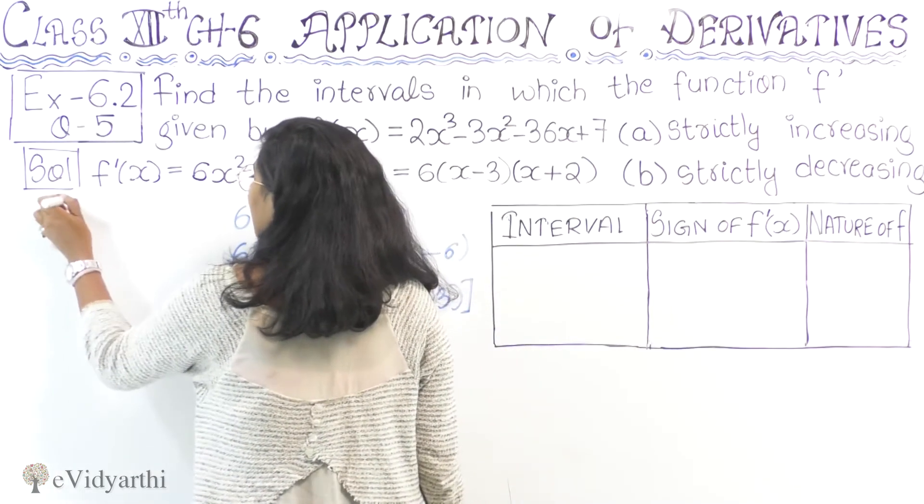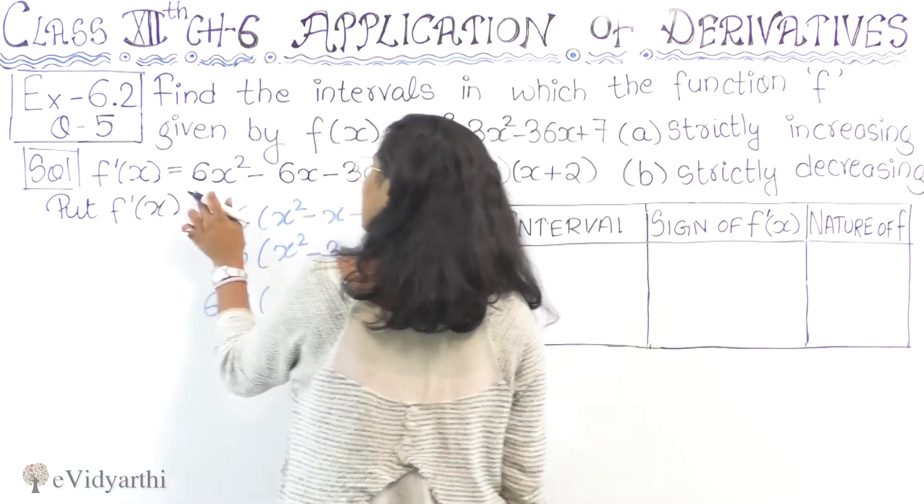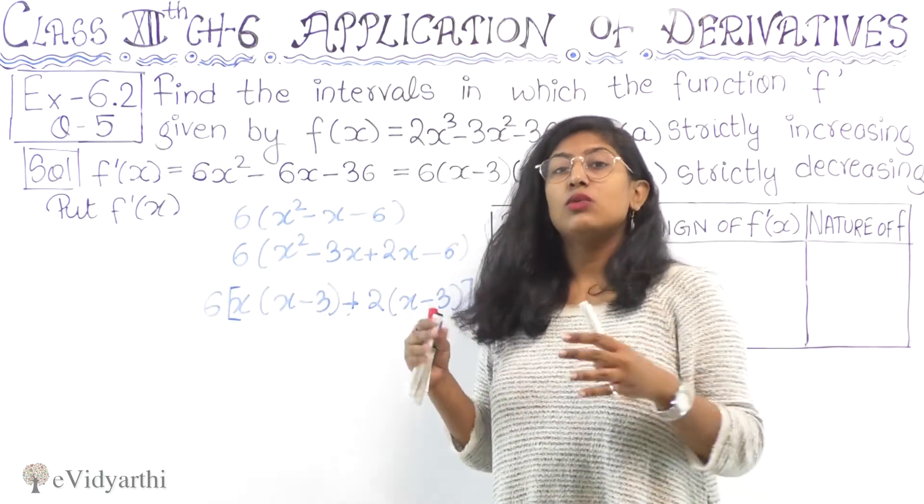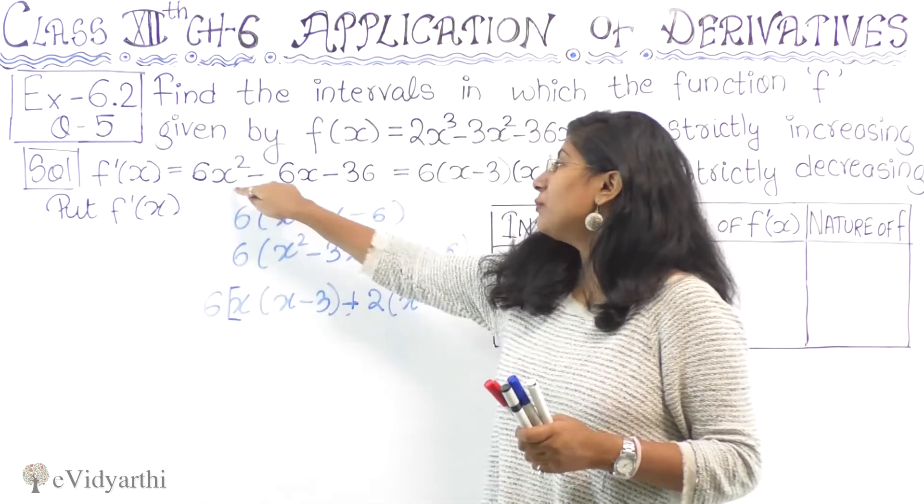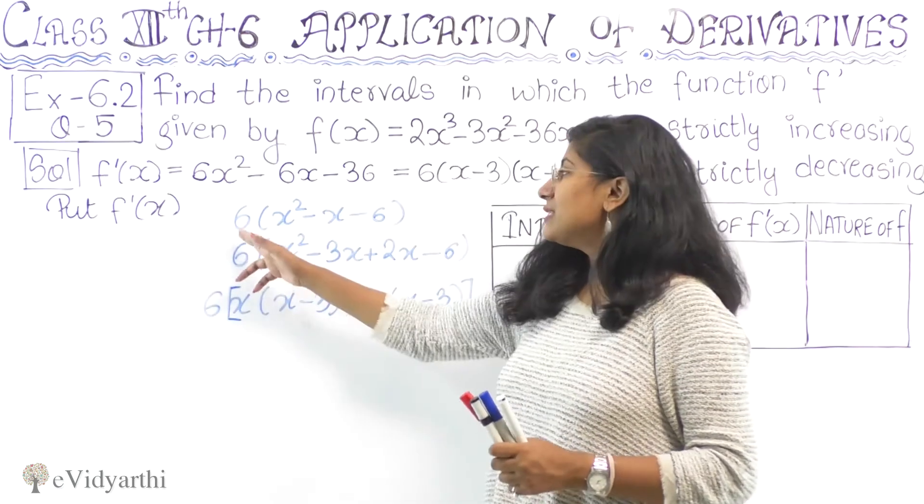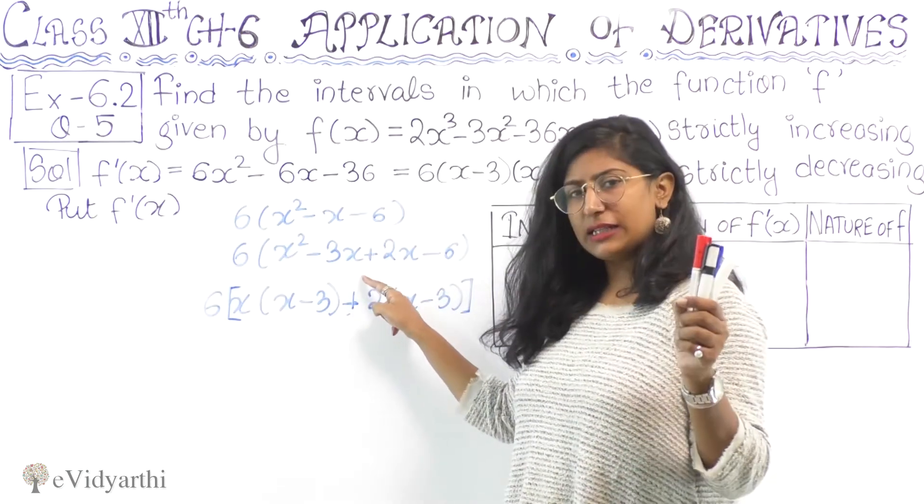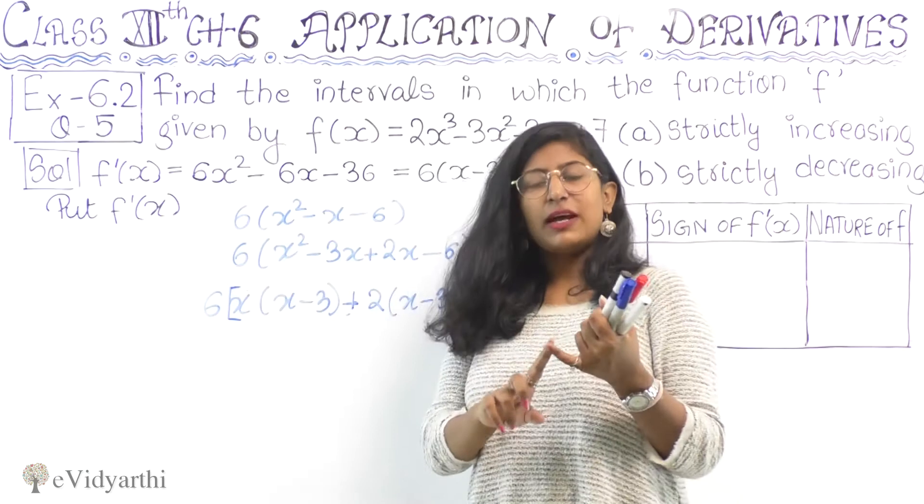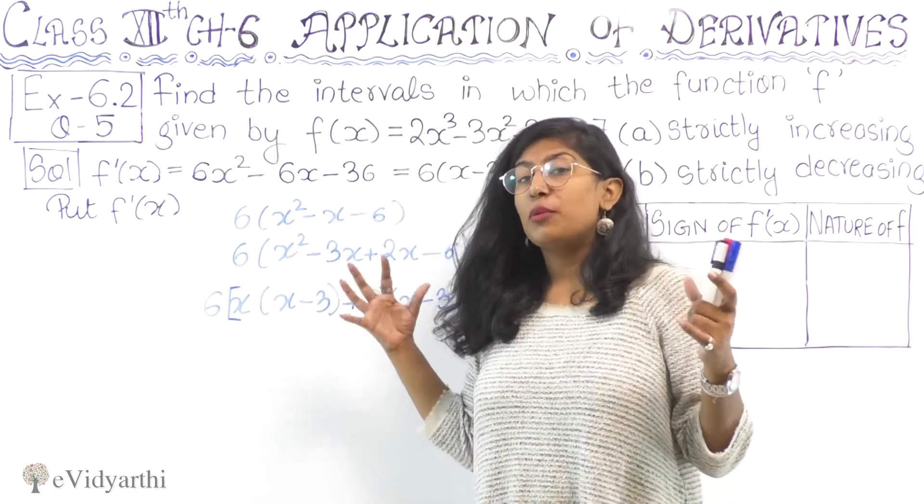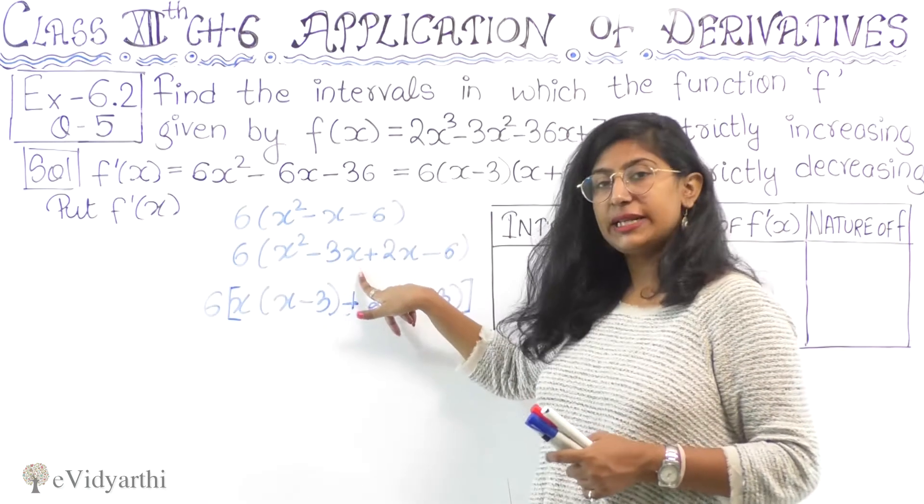We will put f'(x) = 0. First, we need factorization form. Let's take 6 common: 6(x² - x - 6). Now we apply middle term splitting: x² - 3x + 2x - 6, which factors to (x - 3)(x + 2).